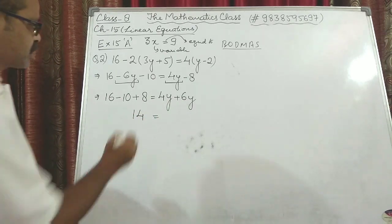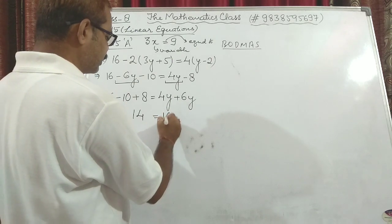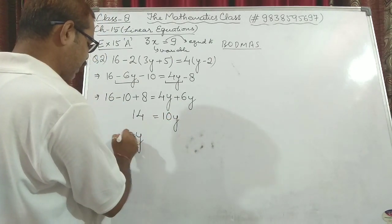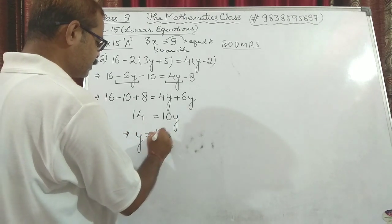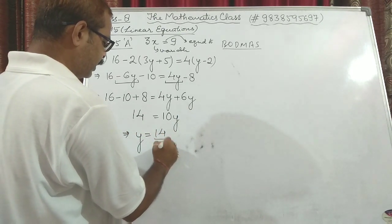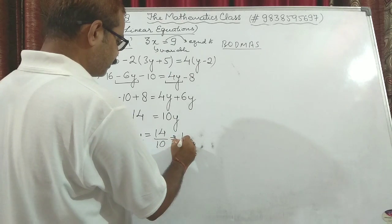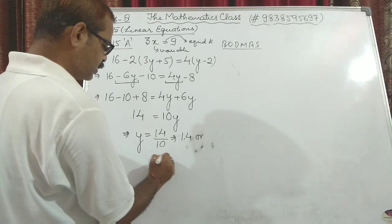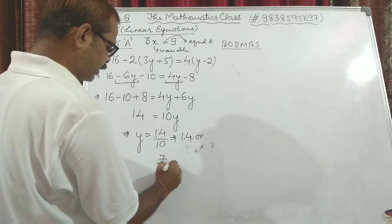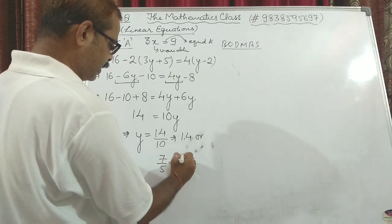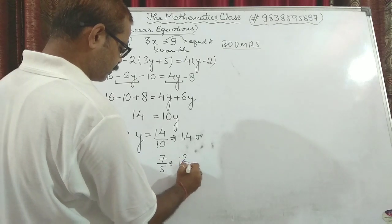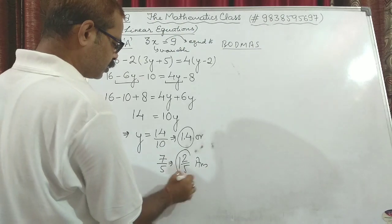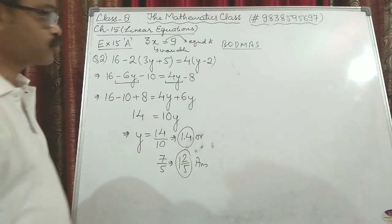6y + 4y = 10y. So y = 14/10, which simplifies to 1.4, or dividing numerator and denominator by 2, we get 7/5. That is the final value.